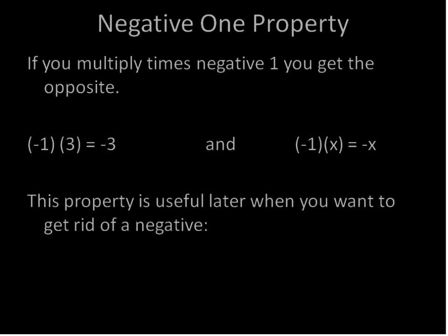Now this property, actually, we will use this quite a bit later on. And we use it mainly when you want to get rid of a negative. So we don't typically multiply negative 1 times a positive number and get a negative, because we don't like negatives. We're going to use it more when we want to get rid of a negative.